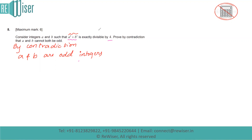Since a is an odd number, it must be of the form 2m + 1, and b must be of the form 2n + 1, where m and n can be any integers. This is the first thing we need to write down.